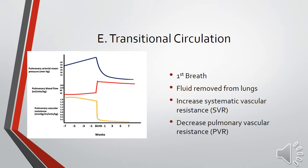The ductus arteriosus constricts at birth, but there's often a small shunt of blood from the aorta to the left pulmonary artery for a few days even in a healthy full-term infant. In premature infants and those with persistent hypoxia, the ductus may remain open much longer. Oxygen is the most important factor controlling closure in full-term infants. Closure is mediated by bradykinin, released from the lungs upon initial inflation, which has a potent contractile effect on smooth muscle. When the PaO2 of blood passing through the ductus reaches about 50 mmHg, the wall constricts. As pulmonary vascular resistance reduces, pulmonary artery pressure falls below systemic level and blood flow through the ductus diminishes.